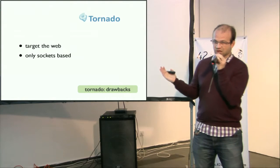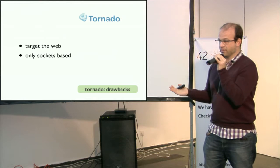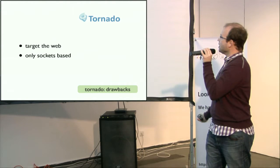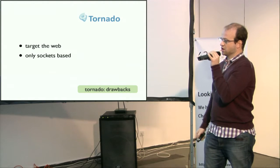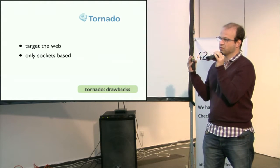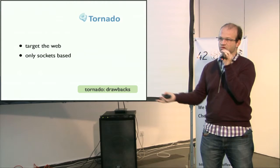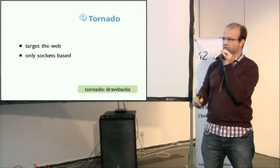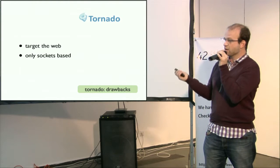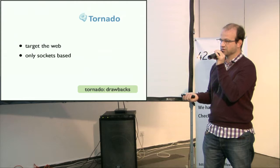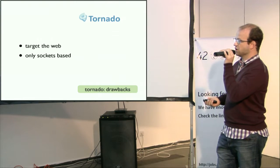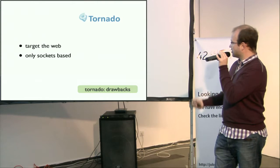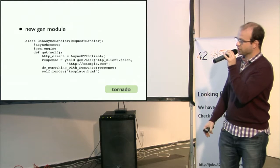The main drawbacks of Tornado: it only targets Python up to 2.4, at least historically, and it is only socket-based. This can be a problem when you start to want to introduce other events, like having a UI on top of Tornado. But you can plug a reactor in place of the higher-level event loop in Tornado. Also, since 2.4 they introduced a new model — the GenEngine module — which allows you to use Python generators transparently.